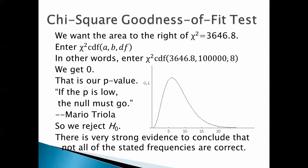That is our p-value. If the p is low, the null must go. So we reject H0. Now, there is very, very, very, very strong evidence to conclude that not all the stated frequencies are correct. Because zero is ridiculously low as a p-value.